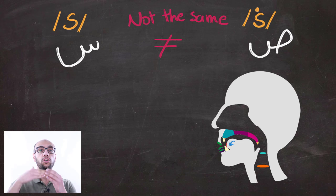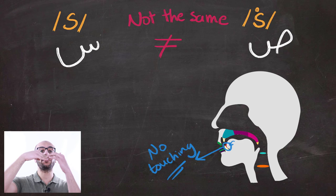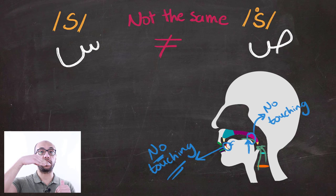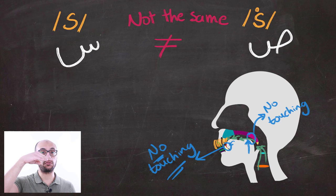Your tongue should look like that. The tip is moving downwards and the back is moving upwards without touching anything. Air passes through and the sound is produced through the friction happening at the alveolar ridge.